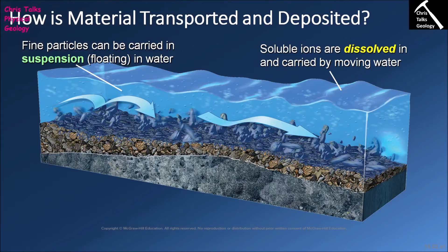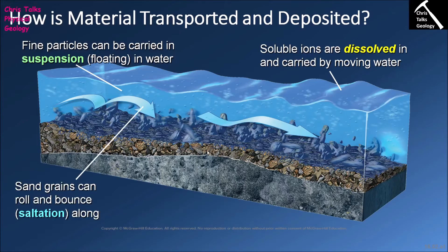In terms of moving material as part of the bedload, it can be moved in one of two ways. The first is saltation, which is essentially a leapfrog motion. As the river moves along, it picks up a clast for a short period of time and transports it briefly in suspension, but then the weight of the clast causes it to be dropped back down into the bedload — a hopping motion referred to as saltation.